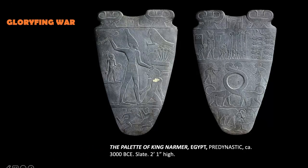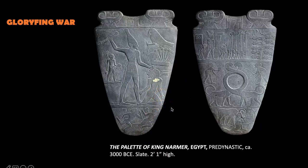Let's head to Egypt and take a look at a similar depiction of a warrior pharaoh, represented as a mighty warrior in a two-sided work that glorifies war as well. It's called the Palette of King Narmer. It's from the pre-dynastic period in Egypt, from circa 3000 BCE, made of stone slate. It's about two feet in height and is a two-sided, shallow sculptural relief, meaning it isn't as raised and pronounced as the plaque we saw in the previous slide.